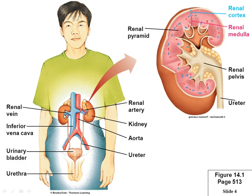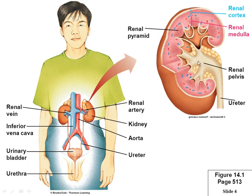The right kidney sits a little lower than the left because the liver pushes down on it. Inside you have the fibrous capsule around the outside, then the cortex just inside with blood vessels, and below it the medullary pyramids — called pyramids because they look like one. The renal pelvis collects urine and drops it down through the ureter to the bladder. You have two ureters, one from each kidney. From the bladder, you push out through the urethra.